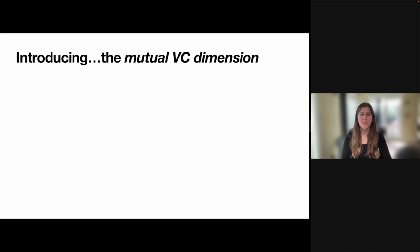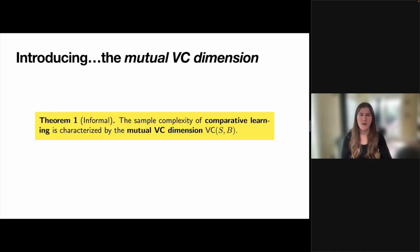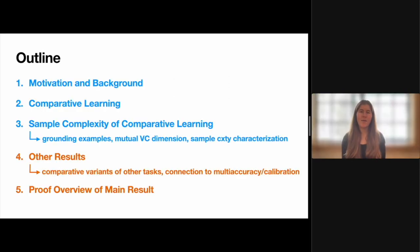In our paper, we show that this intuition holds true. In particular, our main result proves that we can upper and lower bound the sample complexity of comparative learning using the mutual VC dimension. Now that we've seen the definition of comparative learning as well as our main sample complexity result, I'll hand things over to Lun Jia, who will be giving an overview of some related results and extensions, as well as some details on the proof of the theorem we just saw.